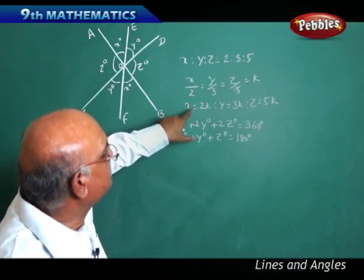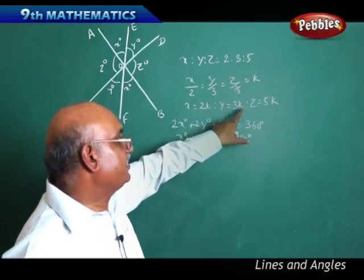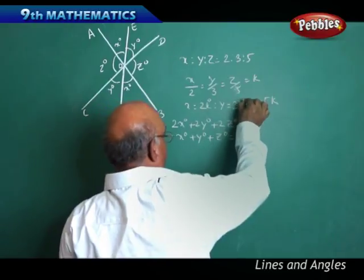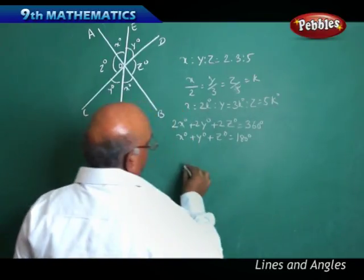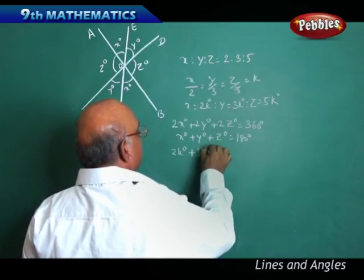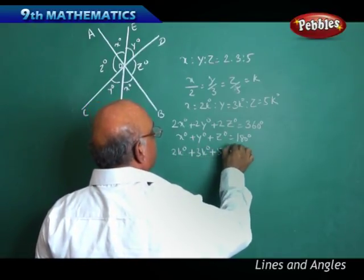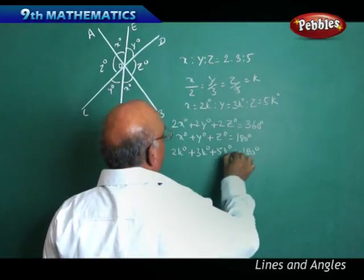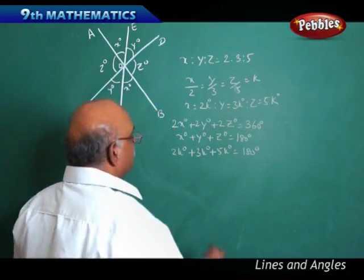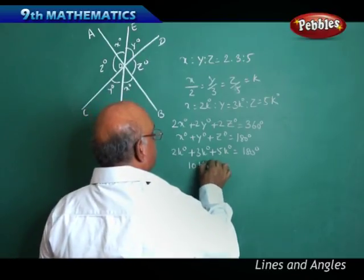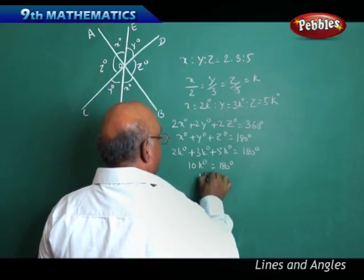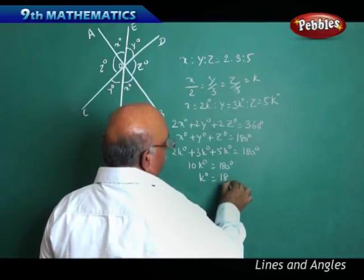Substituting X = 2K, Y = 3K, Z = 5K, we get 2K plus 3K plus 5K equals 180. That gives 10K degrees equals 180 degrees, therefore K equals 18 degrees.